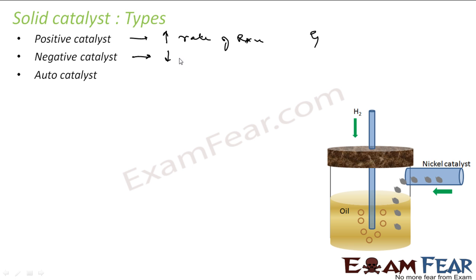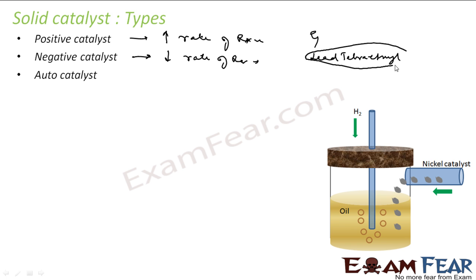A negative catalyst is something which decreases the rate of reaction. One good example is lead tetraethyl, which was used as a negative catalyst in petrol as an anti-knocking agent for internal combustion — it decreases the rate of combustion reaction, giving more mileage. It's not used nowadays as it causes more pollution. Another example: ethyl alcohol is added to chloroform to stop the photolytic action. Chloroform is not stable and easily breaks down, so ethyl alcohol is added to make it stable. The moment you add ethyl alcohol, the chloroform reaction becomes slow — so ethyl alcohol acts as a negative catalyst there.